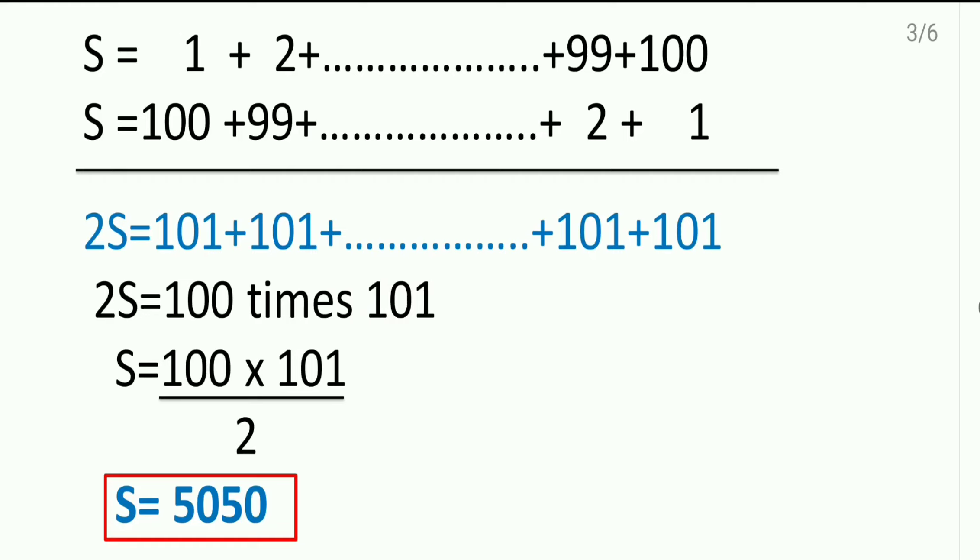First, he had taken sum of first hundred numbers. See here, I have written it in the first equation. He has not written all the 1 plus 2 plus 3 plus 4 in this way. He has just written first few numbers and the last few numbers.